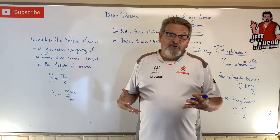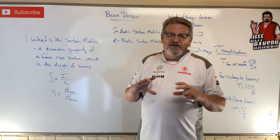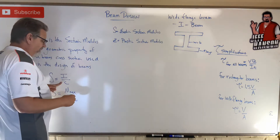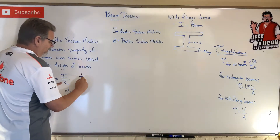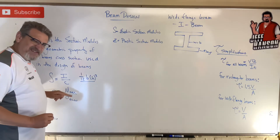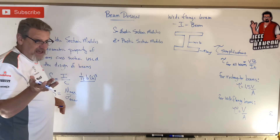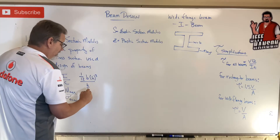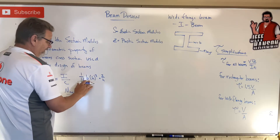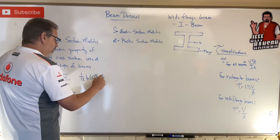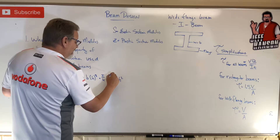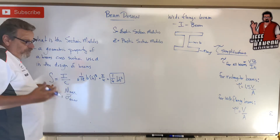If I know something about the beam's cross section, the equation S = I/c is more helpful. For a rectangular beam, I = (1/12)bh³, and c is the distance from the neutral axis to the top, which is h/2. Dividing gives S = (1/6)bh², and that is my S value for a rectangular beam.